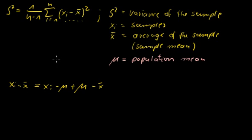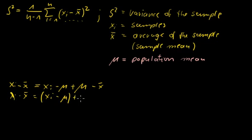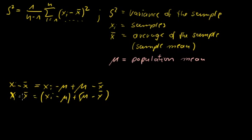The next step is we put some parentheses here and we get the following result. The equation does not change, and we have some advantage. Now in this formula we square this expression — so let's do it. We square this expression.